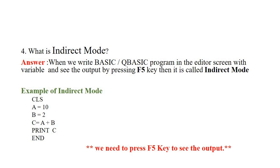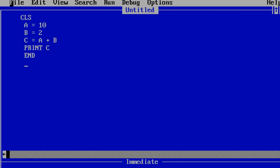This is the F5 function. To run the program, to execute the program, this function is the F5 function. Here we can open the editor module. You will be able to use the F5 function. There are actors visible on the screen.